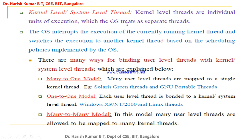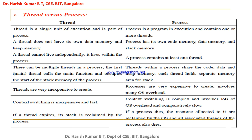Kernel-level threads, also called system-level threads, live inside the kernel address space and are treated as separate units of execution. There are three models for binding user-level threads to kernel-level threads: many-to-one (many user-level threads mapped to one kernel-level thread), one-to-one (each user-level thread mapped to one kernel-level thread), and many-to-many (user-level threads mapped to many kernel-level threads).